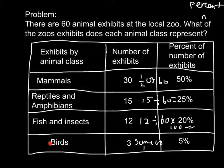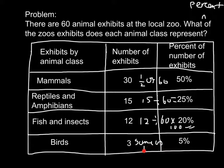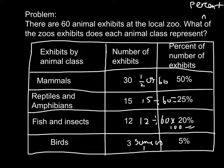Now for the last one, birds — it's quite simple. If you look at the last one and the first one, they are the same, just with the first one there are zeros at the end of the numbers, but with the last one there aren't. So it's going to be 5%. That is how you work out this problem. I hope you enjoyed this video, and I will see you next time. Bye.